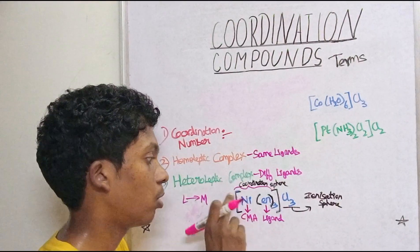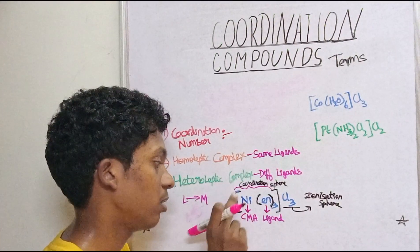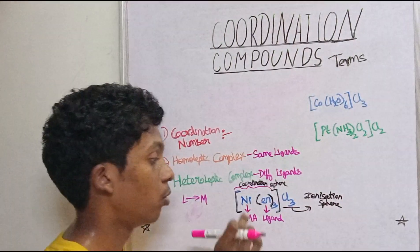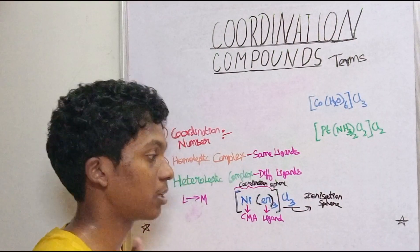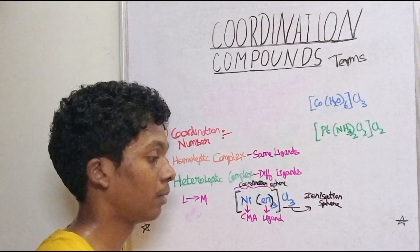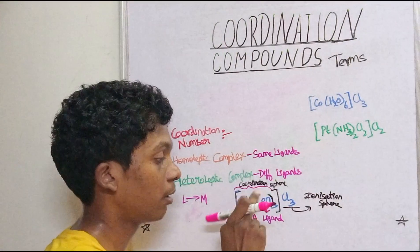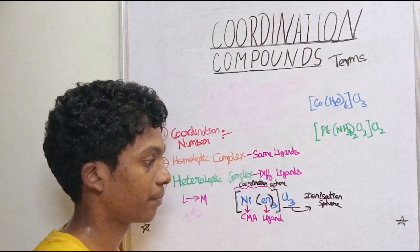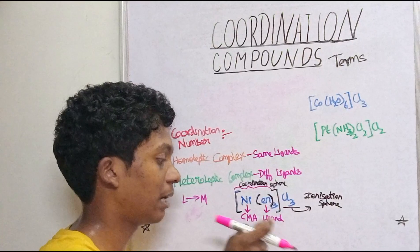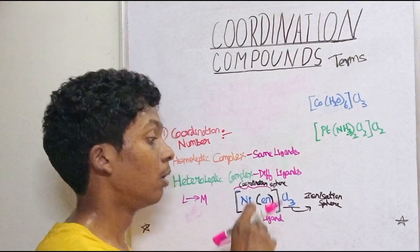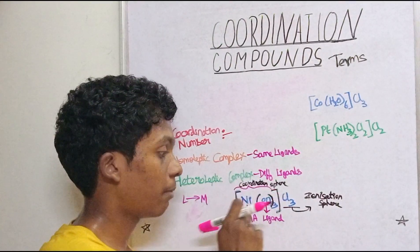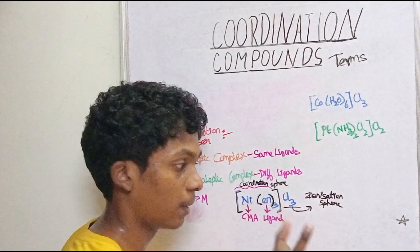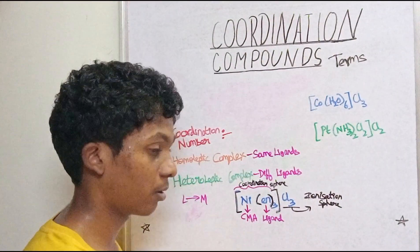So these are the key terms: the Coordination Sphere is the part inside the square bracket. There is a central metal atom — that is the main element. The metal is bonded to a ligand. A ligand donates electrons to the metal. Outside the square bracket is the Ionization Sphere.